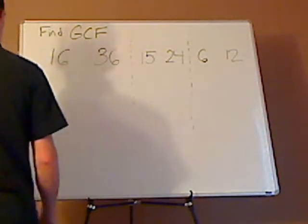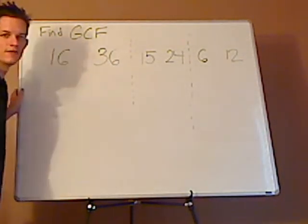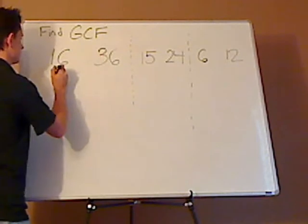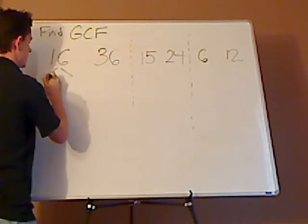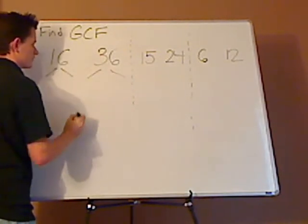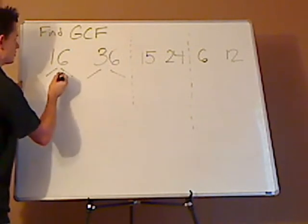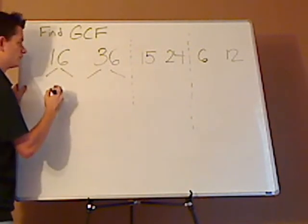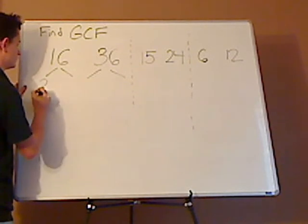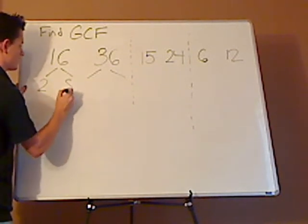If you don't see the Greatest Common Factor right away, what you can do is what's called a Factor Tree. A Factor Tree just basically splits them up. I have 16, 2 goes into 16, 8 times.